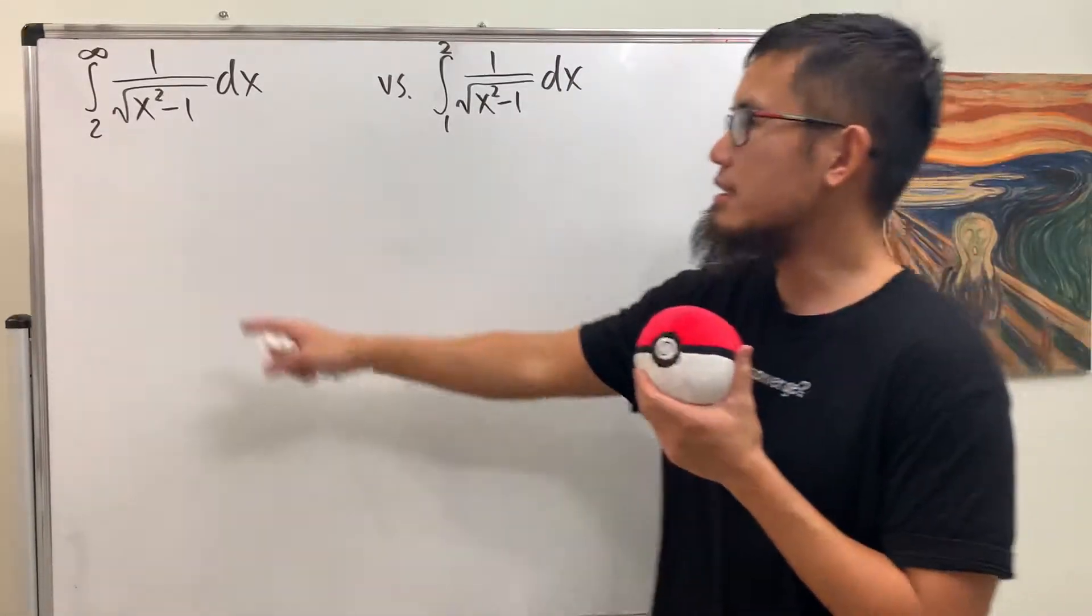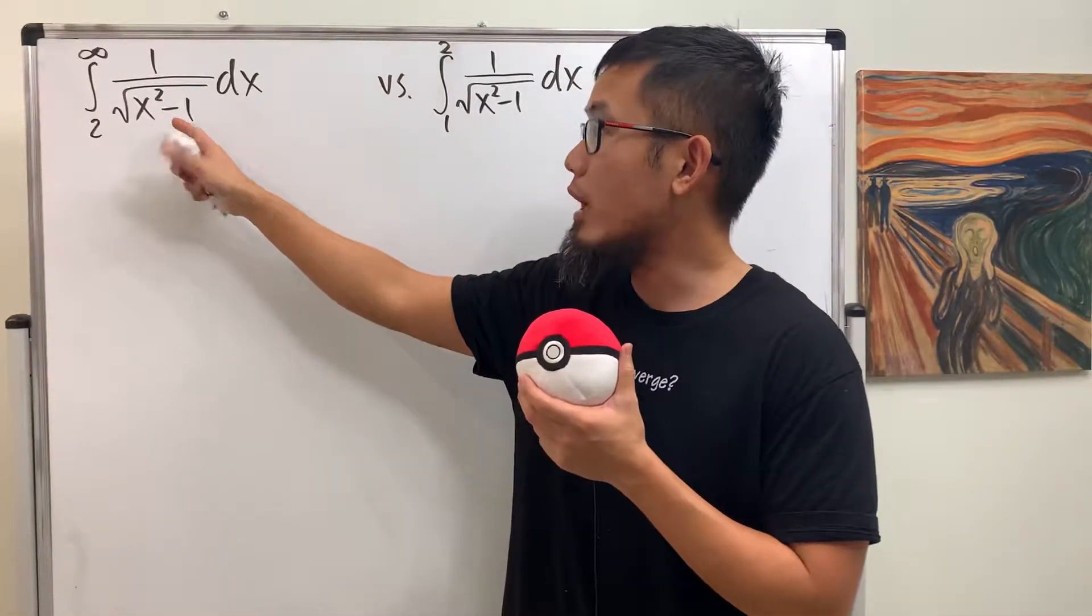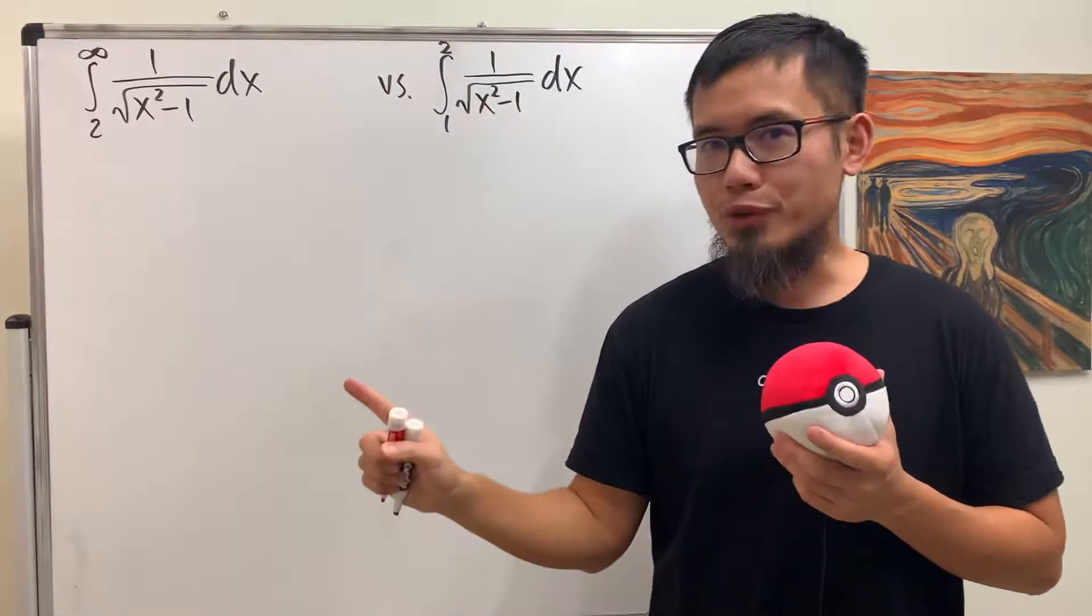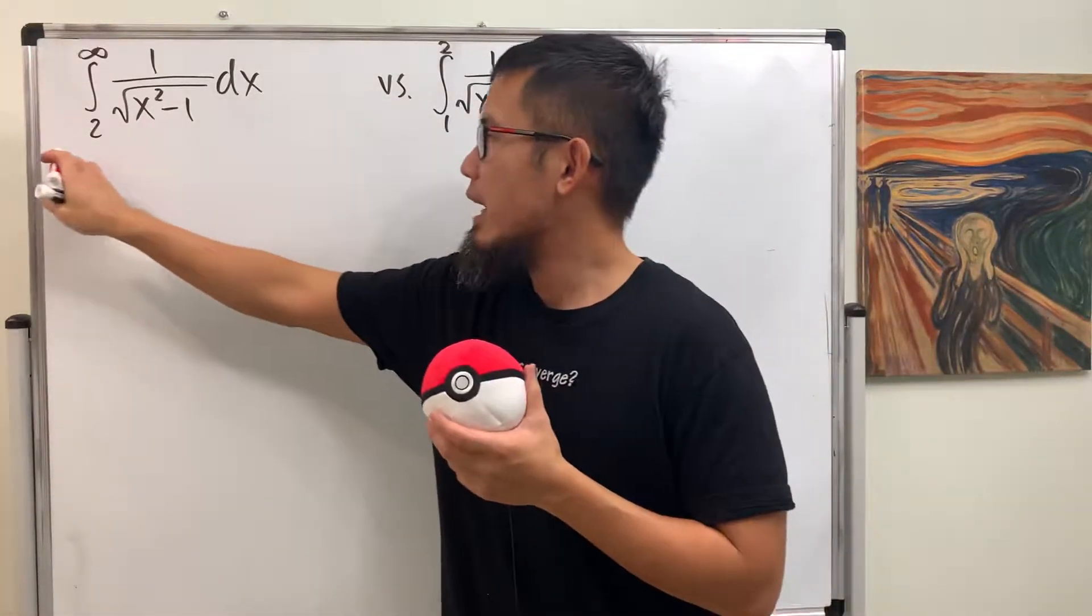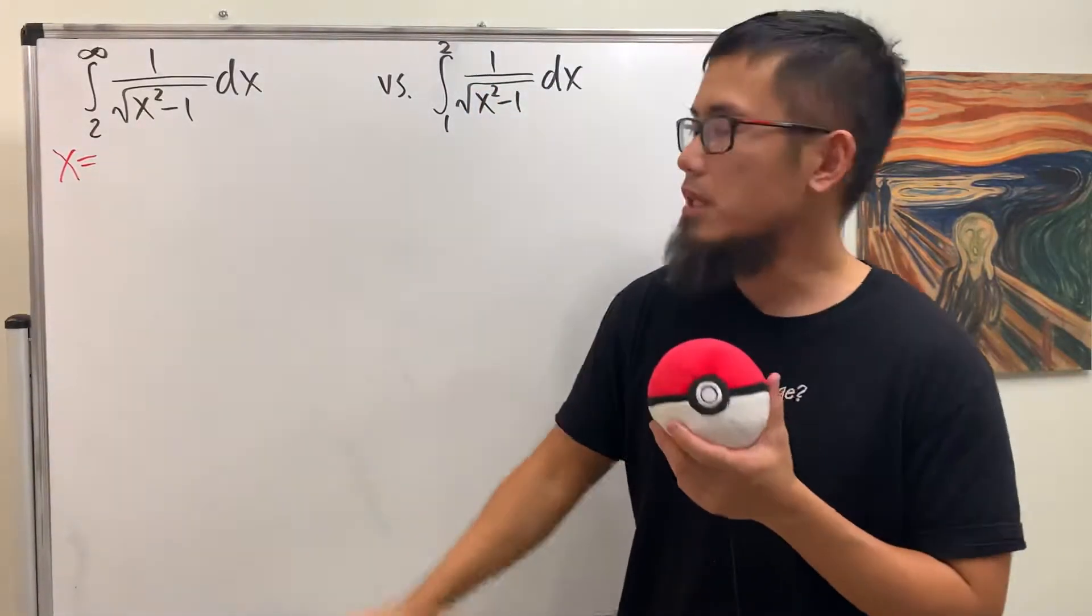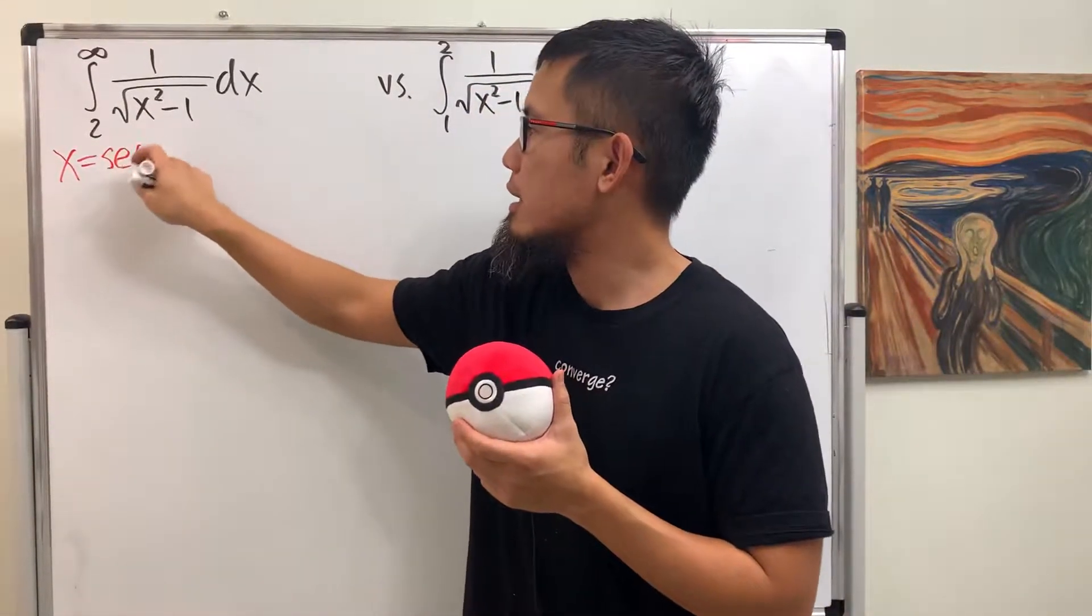Let's do that one first. Notice that this time we have square root of x squared minus 1 on the bottom. Don't do partial fractions because we have the square root. But here we can actually do trig sub, and the correct substitution is let x be secant theta.